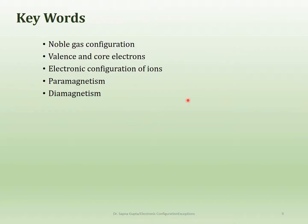The key concepts for this section are: how to fill out configurations using noble gas notation, which shortens your work if you choose the right noble gas; what valence and core electrons are, which will help in the next chapter on bonding; electronic configurations of ions, remembering that valence electrons are removed first; and the two properties — paramagnetism and diamagnetism. Make sure you understand all of these concepts before moving ahead.